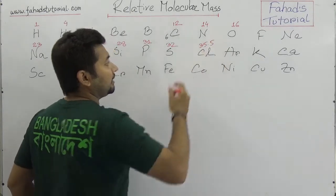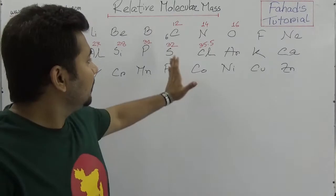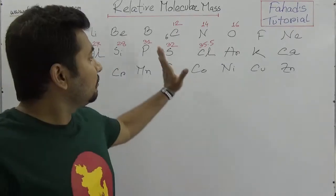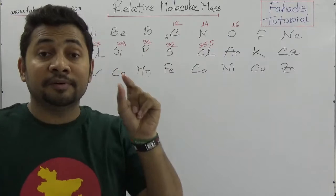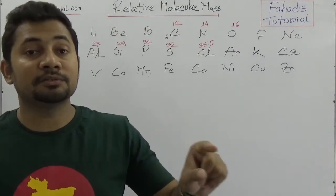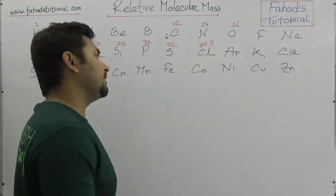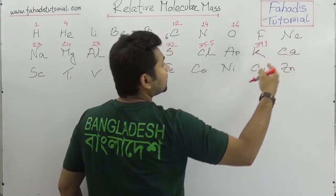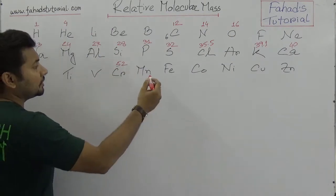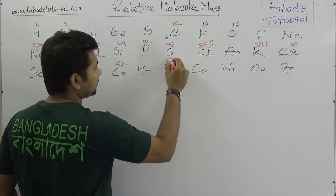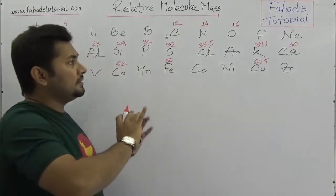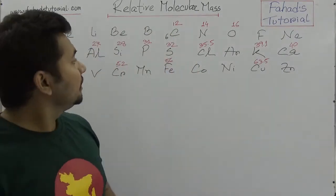Phosphorus is 31, sulfur is 32, and chlorine is a fractional number — 35.5. With a lot of practice and exams, these numbers become automatic. Chlorine is 35.5 times higher than the mass of 1/12th of carbon-12. Potassium is 39.1, calcium is 40, chromium is 52, iron is 56, and copper is 63.5. These are the values most commonly used when working with relative molecular mass.